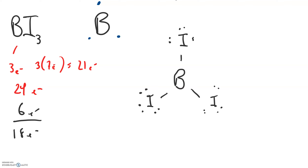Sometimes that's just how it works. In a case like this, I'm going to indicate a molecule that violates the octet rule with an asterisk. Boron triiodide is one of these — boron is perfectly fine with just having six electrons in the outermost energy level. This is a situation where the octet rule isn't satisfied, and we just deal with it.